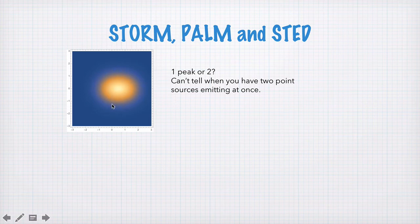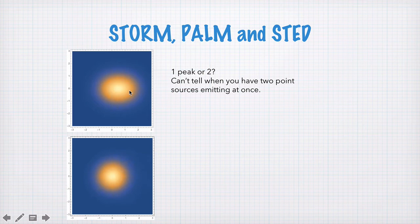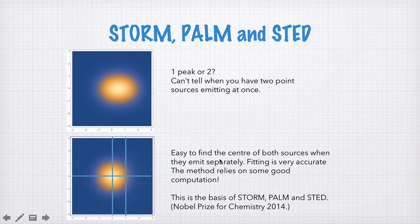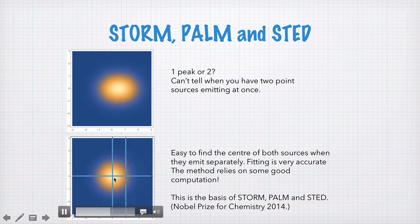Here's an example of exactly how this might work. In this image, you can't really tell whether there are one or two fluorescing molecules — they're very close together and the blob might be slightly elongated. But if I can convince the two sources to emit separately, I can see two distinct blobs, and now I can localise the individual fluorescing atoms or molecules. It's easy to find the centre of both sources when they emit separately. If they emit together it's no good, but if they emit separately and each is a perfect point source, I can fit a distribution and localise the centre really, really well.